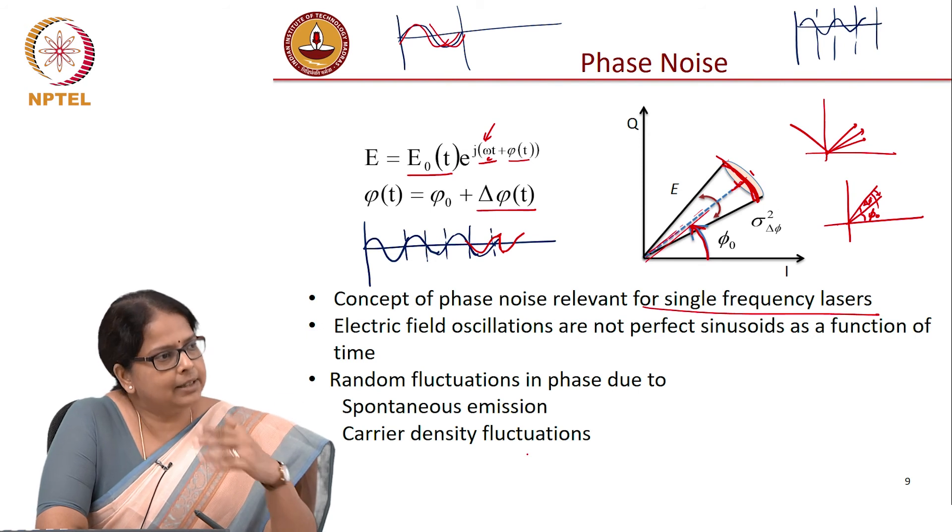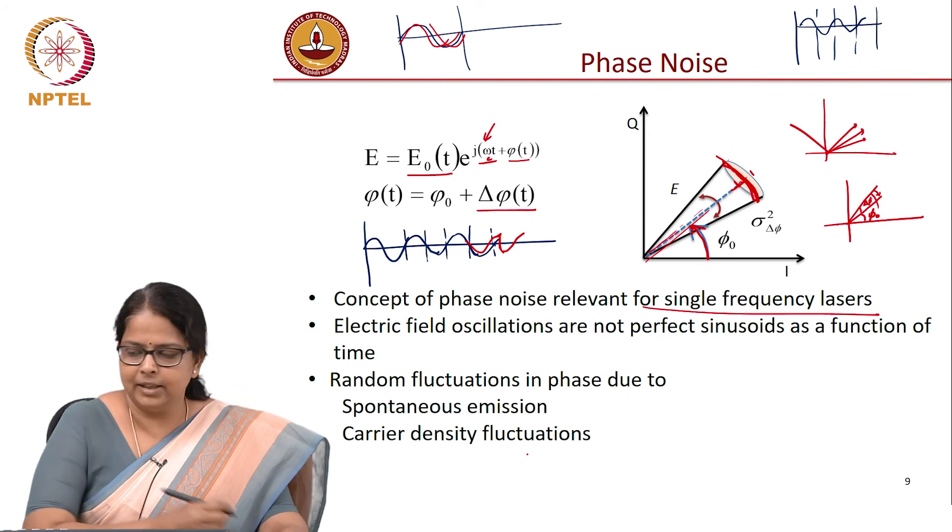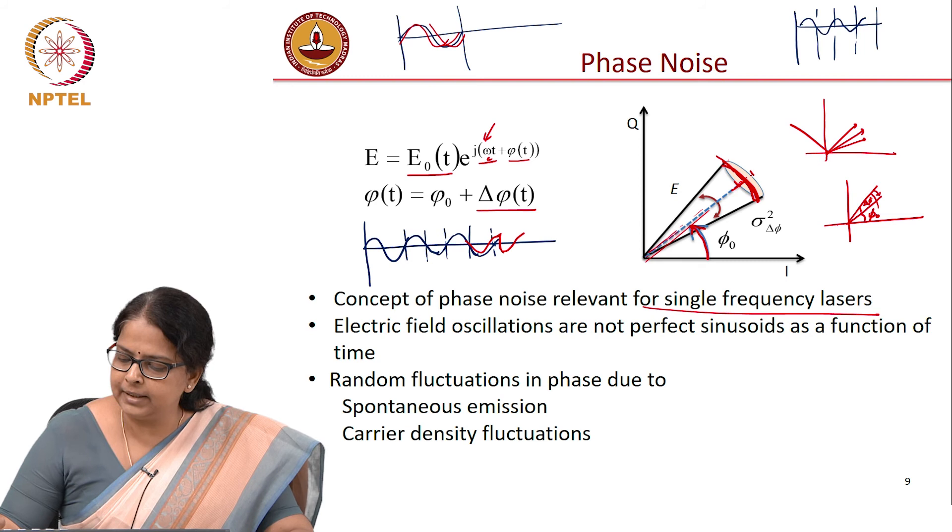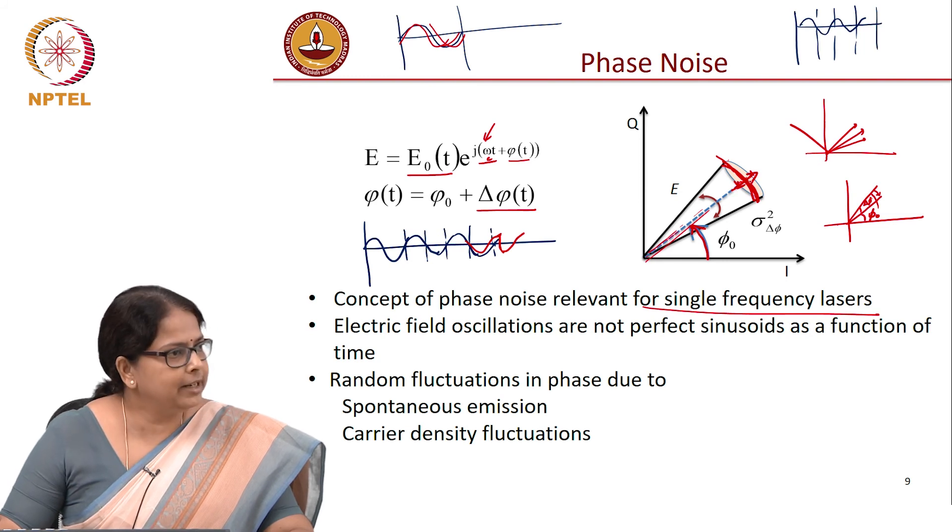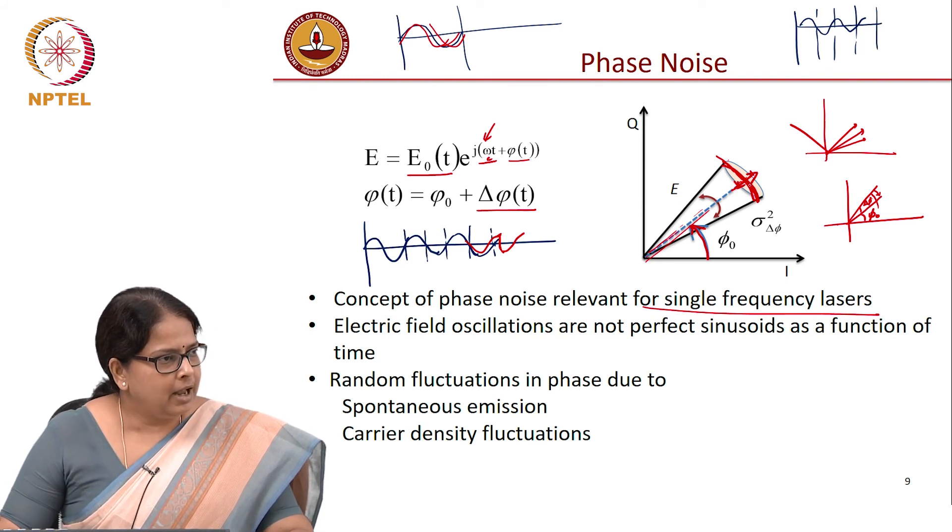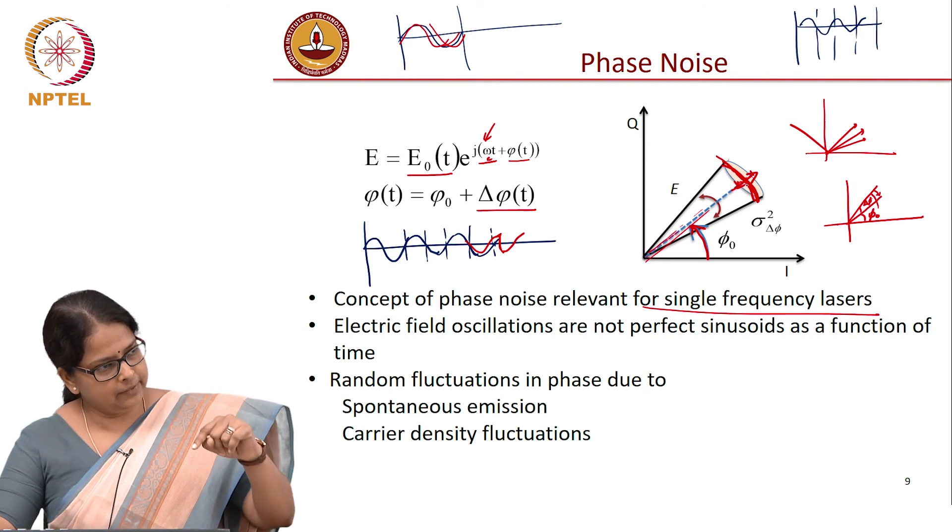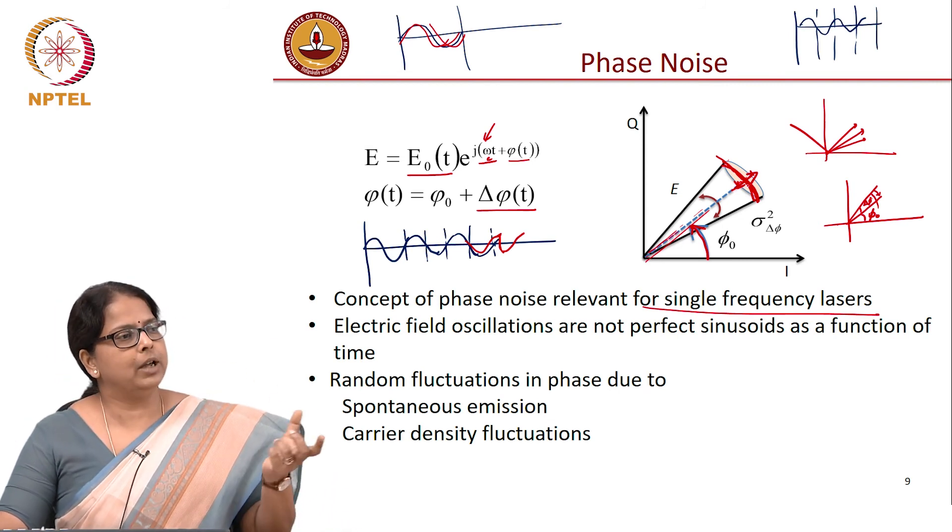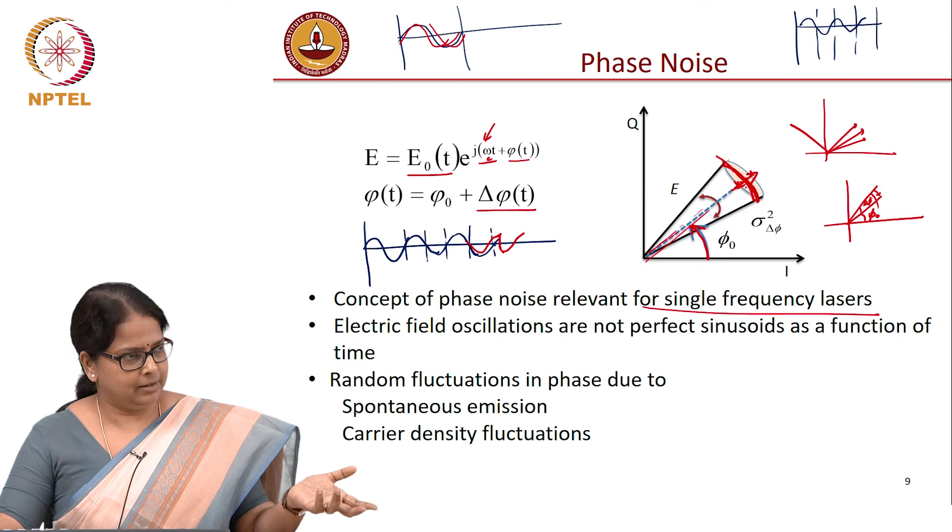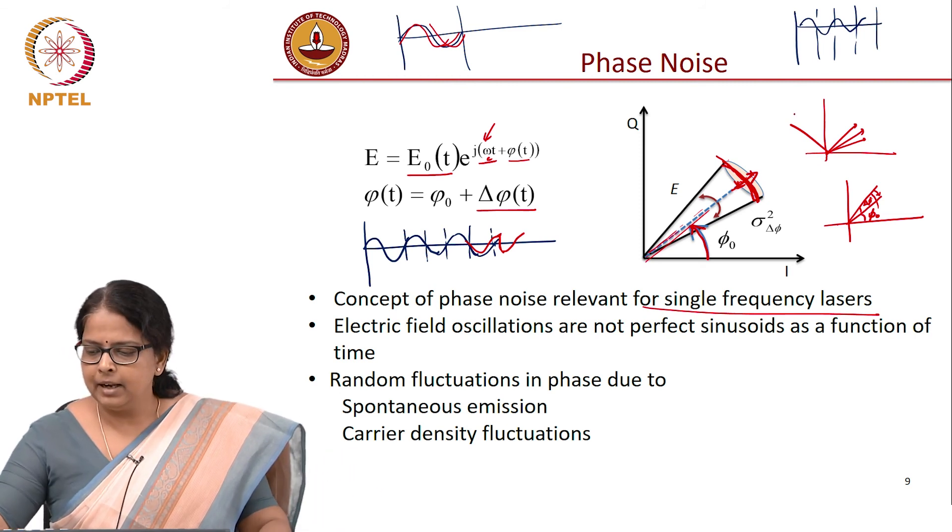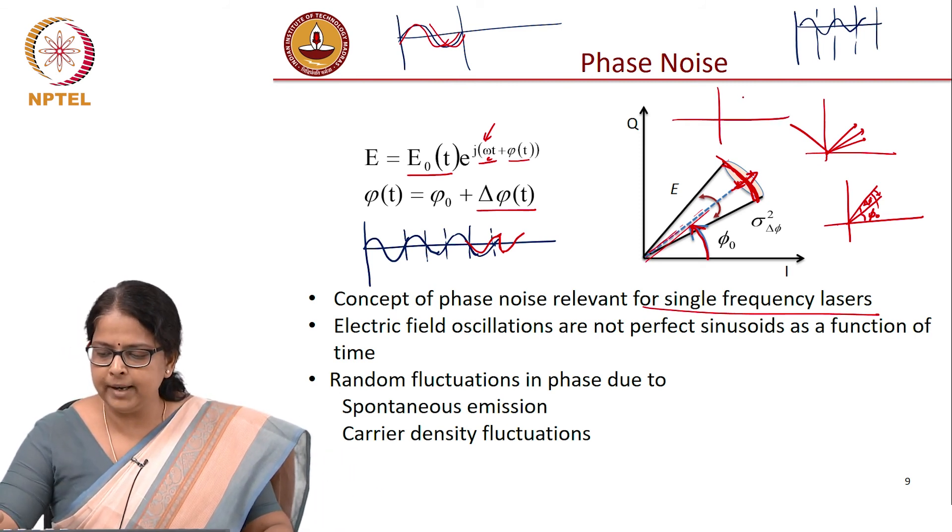In reality, that is absolutely not true. It is intensity varying, which means the length of the vector will vary. And as a consequence of intensity varying, you will also have phase varying and you could also have phase varying independently. So, in reality, my constellation, which was a point,